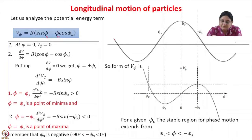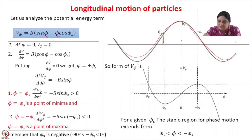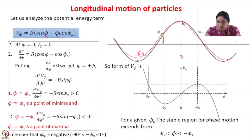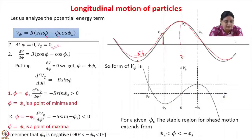This is the E_z field. The synchronous phase has to lie between 0 and minus pi by 2. So the synchronous phase is chosen between minus pi by 2 and 0. If we take phi equal to 0, V(phi) comes out to be equal to 0.